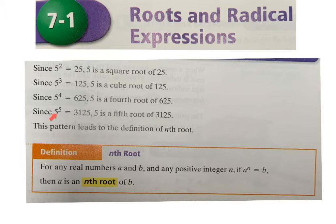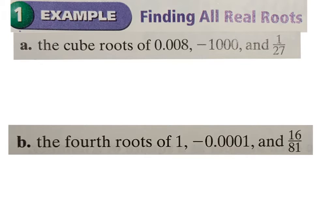For example, five is the fifth root of 3125. If you can take a number to a power, it is that power's root of that number. Looking at just finding roots — the first example asks for cube roots of 0.008, negative 1000, and 1/27. We want the numbers that, multiplied by itself three times (raised to the third power), give those numbers. For a decimal, look at just the number itself: what is the cube root of 8?